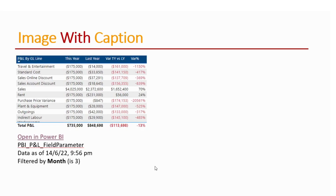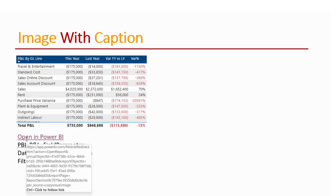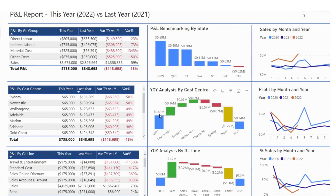If you paste it in PowerPoint, you get to see the image and useful captions at the bottom. You get the name of the Power BI report where we copied the information from, as well as the filtering that was applied before we copied and pasted. There is also a link — if you Ctrl+click it, it brings you to the original Power BI report, showing the filtering that was applied and the table where we copied the image from.